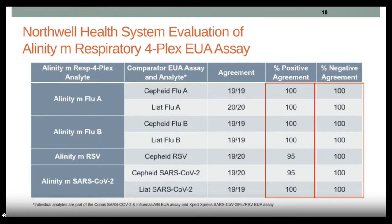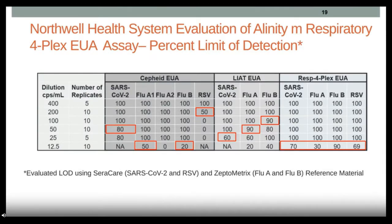Comparing the Alinity M to the Cepheid and Cobas Liat, we found a very high degree of positive percent agreement and 100% negative percent agreement across all analytes. The only notable difference was 95% positive percent agreement for the Cepheid versus Alinity for RSV. One important note: the Liat does not have RSV — it only detects flu A, flu B, and SARS-CoV-2 — which is why only the Cepheid was used as the RSV comparator.